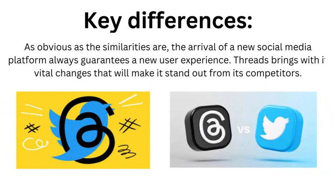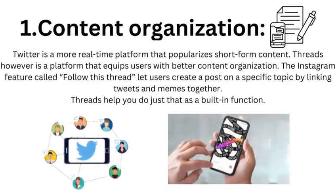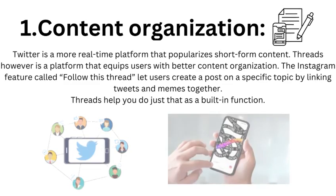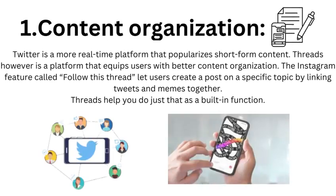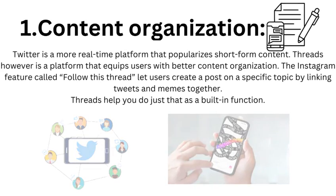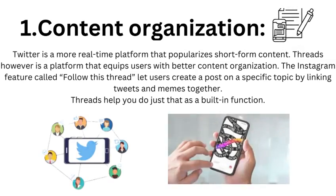Key differences: as obvious as the similarities are, the arrival of a new social media platform always guarantees a new user experience. Threads brings with it vital changes that will make it stand out from its competitors. In terms of content organization, Twitter is a more real-time platform that popularizes short-form content, whereas Threads equips users with better content organization. The Instagram feature called Follow This Thread let users create a post on a specific topic by linking tweets and memes together — Threads makes this a built-in function.